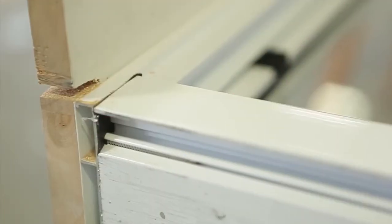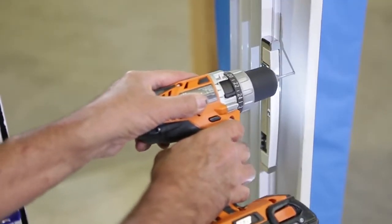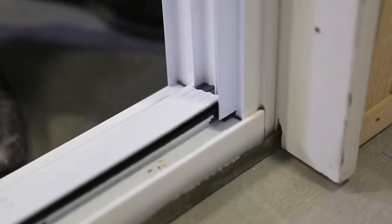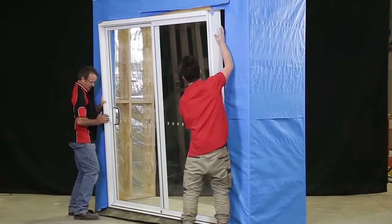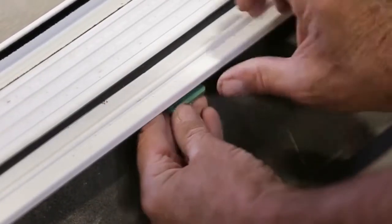You may need to cut a notch in the reveal so that it can sit over the flashing. Pre-drill the door for the fixing screws. Position the door over the sill flashing roughly in the centre of the opening and level the seal using packers.